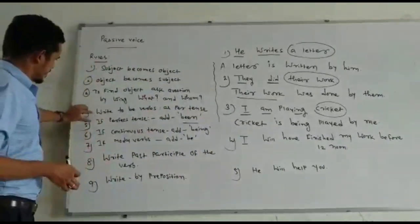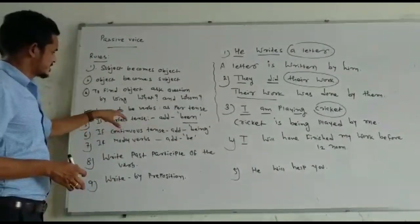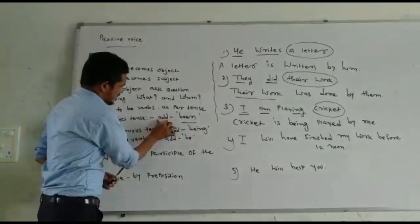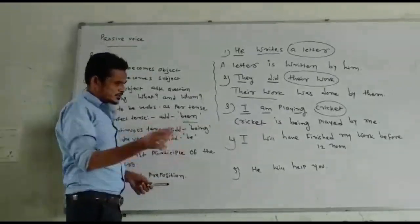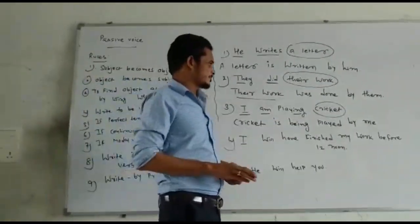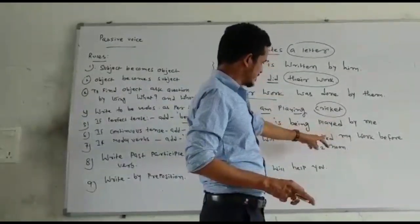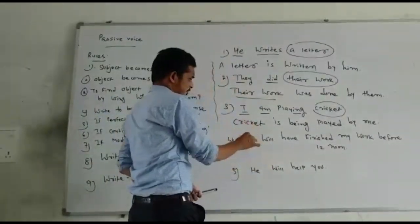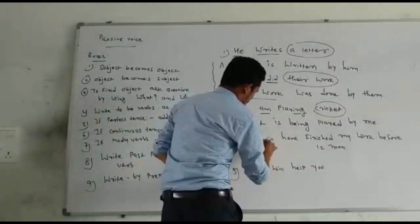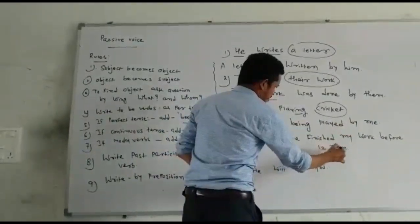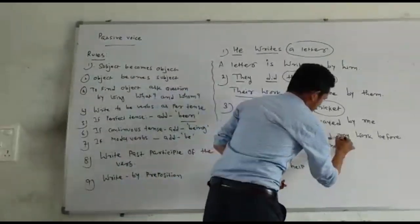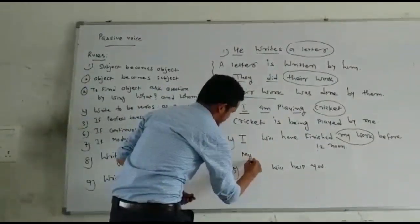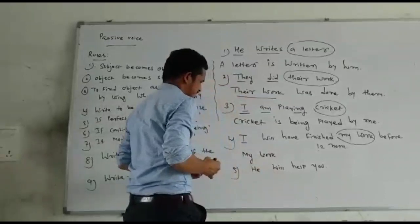Another rule: if any perfect tense is given — whether present perfect, past perfect, or future perfect — we have to add 'been' to make it passive. We don't have to write the past participle again because it is already given in the perfect tense. Example for future perfect tense: 'I will have finished my work before 12 noon.' The object is 'my work.' We write: 'My work will have been finished...'